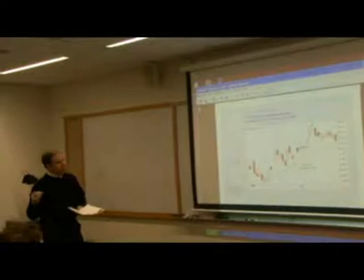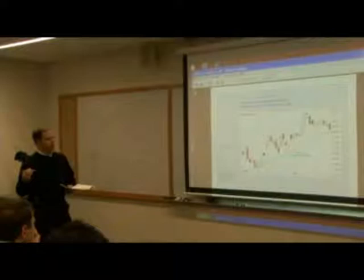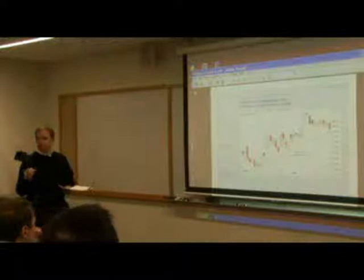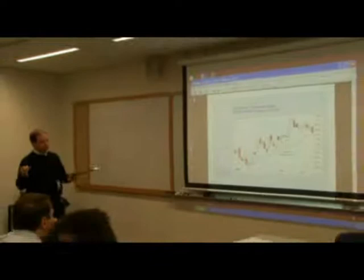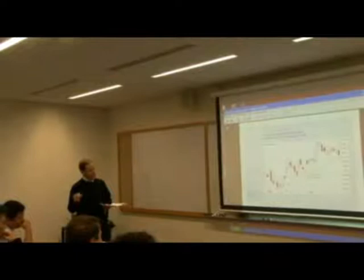This is the same chart done with candlesticks. With candlesticks, we're looking at a little bit more information in each bar — the low, the high, the open, the close, and the relationship between open and close. White real bodies mean up days; dark real bodies mean down days. Nothing really changes as far as drawing the trend line — it applies the same way as it would to any regular bar chart. This time we used the actual lows rather than closing prices.